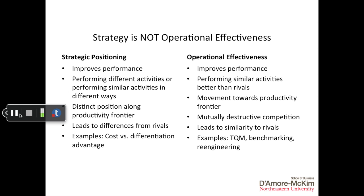Strategy is about a unique position — performing different activities or performing similar activities in different ways — that creates a distinct position along the frontier, leading to a different answer to the who, what, and how questions. It is important to note strategy is not about operational effectiveness. It is not about benchmarking or optimization and moving towards the productivity frontier. Benchmarking and optimization tend to make rivals more similar, whereas strategy wants the exact opposite: being different so customers will have a reason to choose you over a rival firm.